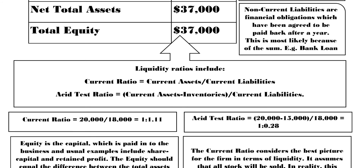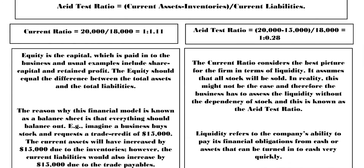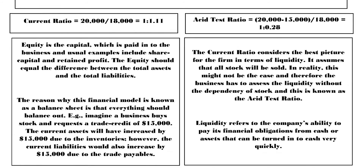Most textbooks say the current ratio shouldn't be less than 1.5 because otherwise there's too much risk. If something happens in the external environment — maybe the economy is not performing and that impacts demand, or a new company enters the market — and stock isn't sold, they won't be able to cover their financial obligations. The acid test ratio really highlights this: if stock wasn't in the equation they wouldn't be liquid. The current ratio considers the best-case picture; it assumes all stock will be sold. In reality this might not be the case, so the business has to assess liquidity both with and without the dependency on stock.